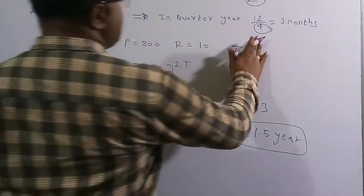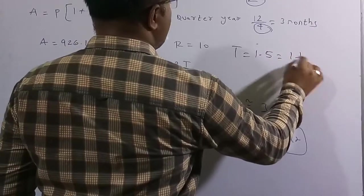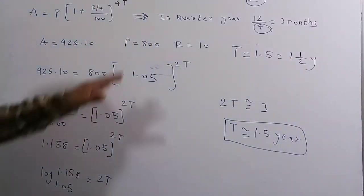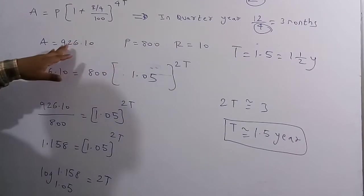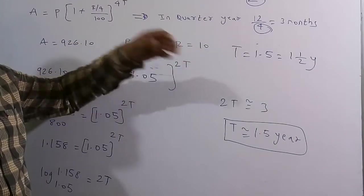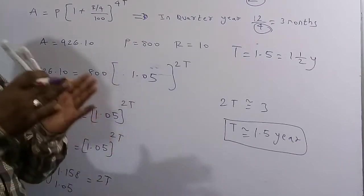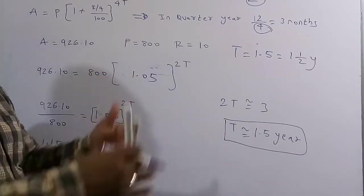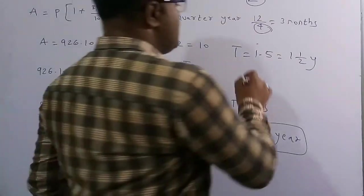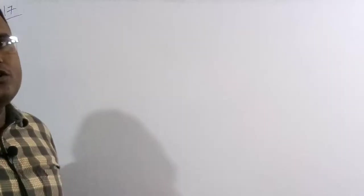Therefore, with a principal of ₹800 at 10% per annum compounded semi-annually, the amount becomes ₹926.10 in 1.5 years. The correct answer is 1.5 years.